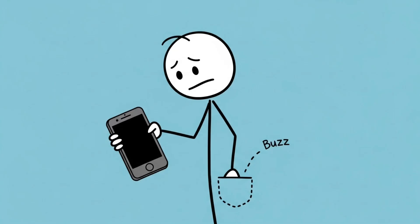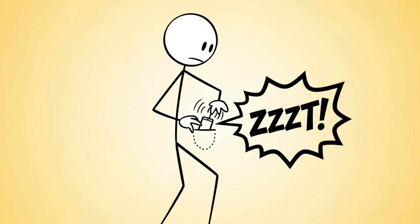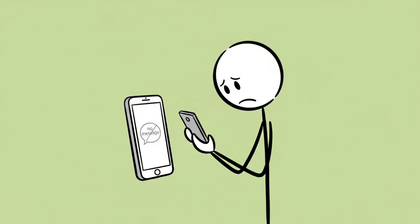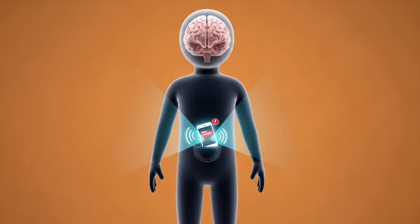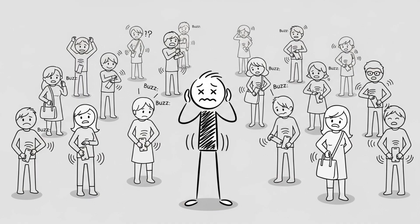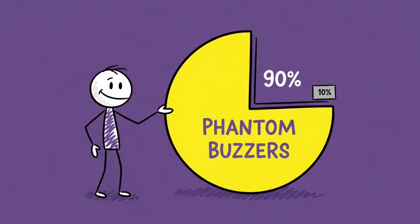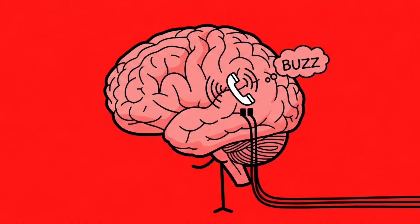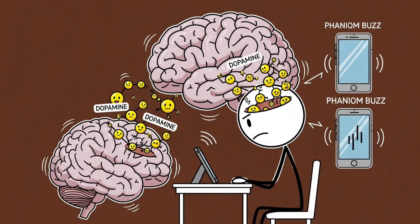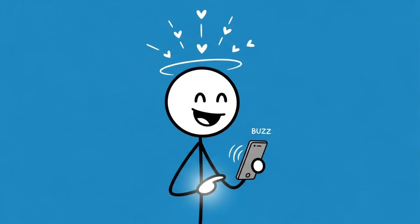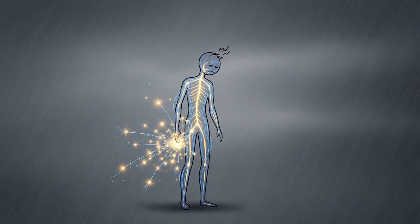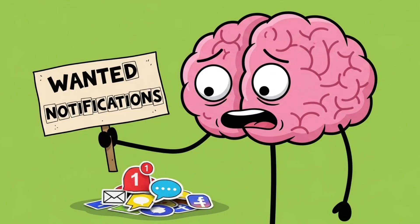Number 6: Phantom Phone Syndrome. You've felt it — that weird little buzz in your pocket when your phone didn't actually buzz. You grab it, expecting a message, nothing. Congratulations, your brain just hallucinated technology. This is called Phantom Vibration Syndrome, and it's disturbingly common — studies show up to 90% of people experience it. Your brain has literally rewired itself to expect phone notifications so much that it creates them when they're not there. The reason? Dopamine. Every time your phone buzzes, your brain releases a small hit of the feel-good chemical. Over time, your nervous system gets trigger-happy, misinterpreting random muscle twitches or pressure changes as phantom alerts. It's like your brain's addicted to the idea of being wanted, even if it has to fake it.